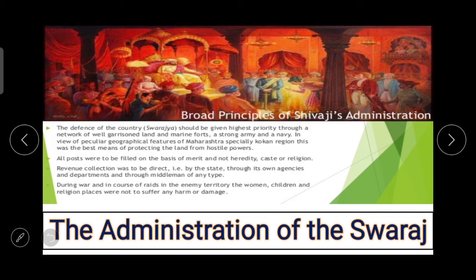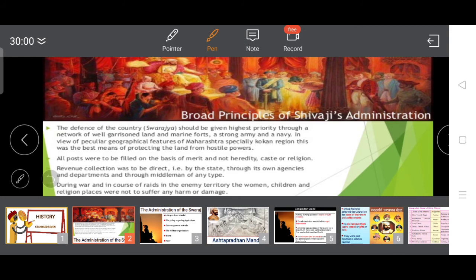Today in democracy we have administration which runs all activities related to public affairs. It was there in the Swaraj also, and that is why we are talking about the Swaraj — because of its effective administrative system. As we learned, Shivaji Maharaj founded the Swaraj with the help of his companions, under the guidance of Rajmata Jijabai and Shahaji Raje. He then had himself crowned, and after the coronation Maharaj accomplished Dakshin Digvijay — the conquest of the south.